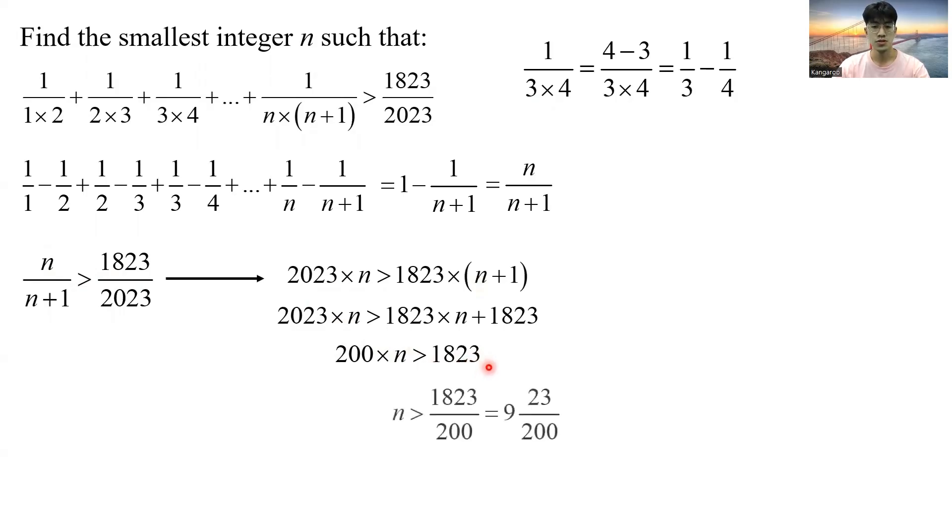To find that 200 times n must be greater than 1823. And from there, it is fairly simple to find out n must be greater than 9 and 83 over 200. And since we need to find the smallest integer of n, which is just n equals 10 in this case. So the final answer is 10.